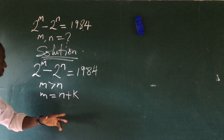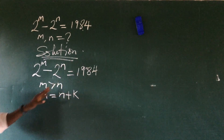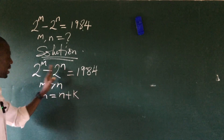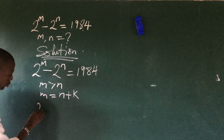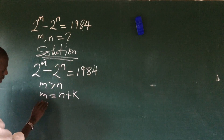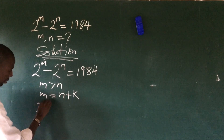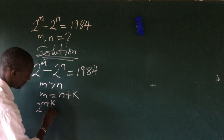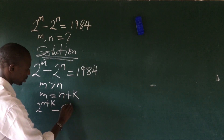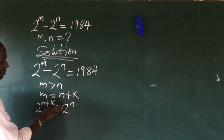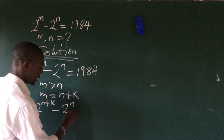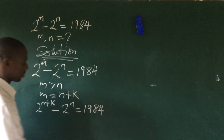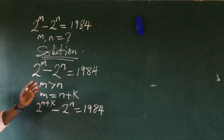So what that means is m equals n plus a set of constants — let's use k. So we can replace m with n plus k and rewrite this expression as 2 to the power of n plus k, minus 2 to the power of n, equals 1984.